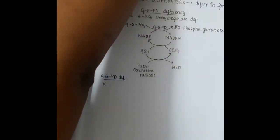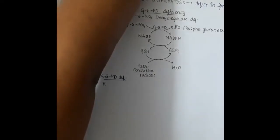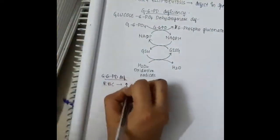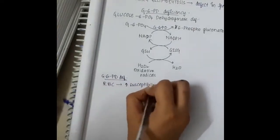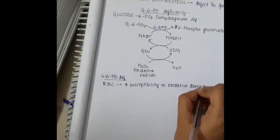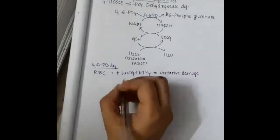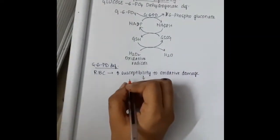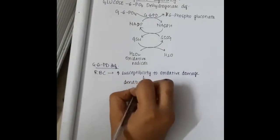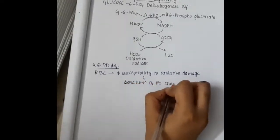All this process occurs when Glucose 6 Phosphate Dehydrogenase is present normally. But if there is Glucose 6 Phosphate Dehydrogenase deficiency, in such cases in RBC there is increased susceptibility to oxidative damage.